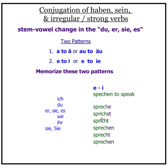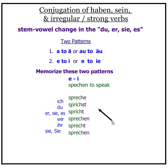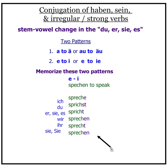Sprechen has the 'e' to 'i' pattern: ich spreche, du sprichst, er/sie/es spricht. Wir sprechen, ihr sprecht, sie/Sie sprechen. So ihr sprecht — no stem vowel change.